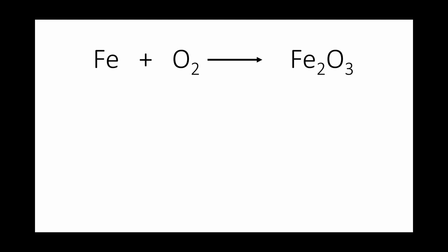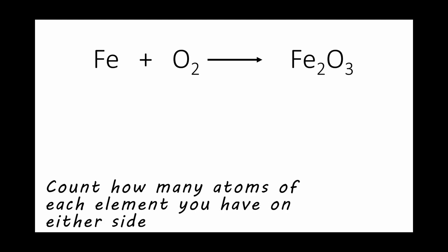Okay, so when balancing equations the end goal is to have the same number of atoms of each element on either side of the arrow. So the first thing you want to do is count how many atoms of each element you have on each side. So for this I'm going to switch to my whiteboard so we can work on this together.